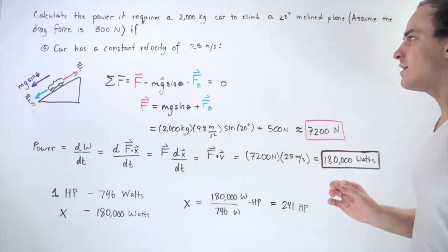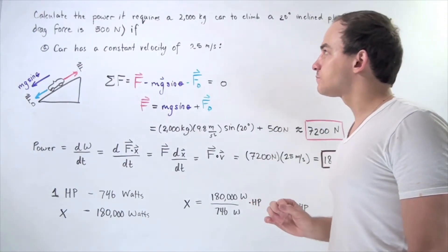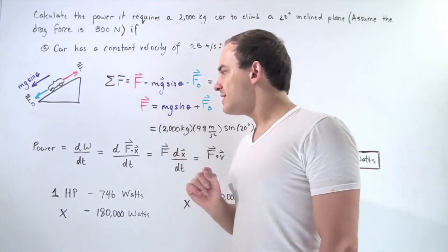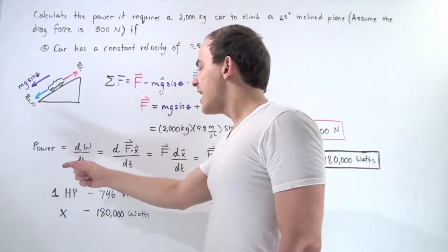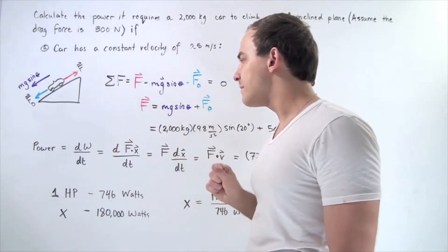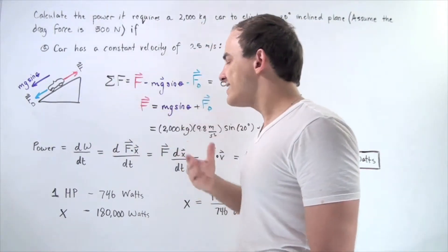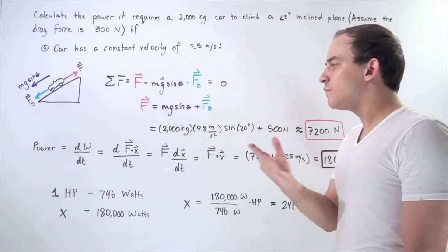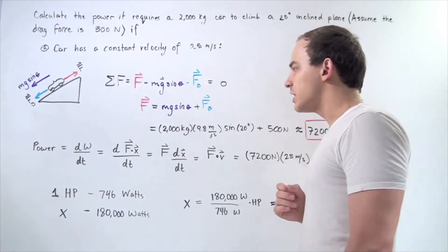Now, how exactly do we calculate the power? Recall the formula for instantaneous power is equal to our derivative of the work function with respect to time. And recall that work is equal to the dot product of the force and displacement function.